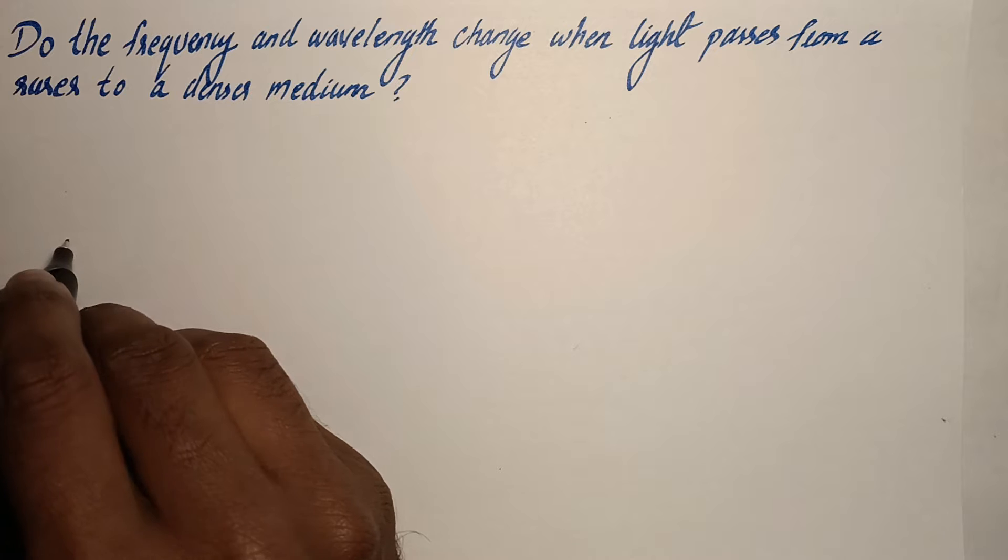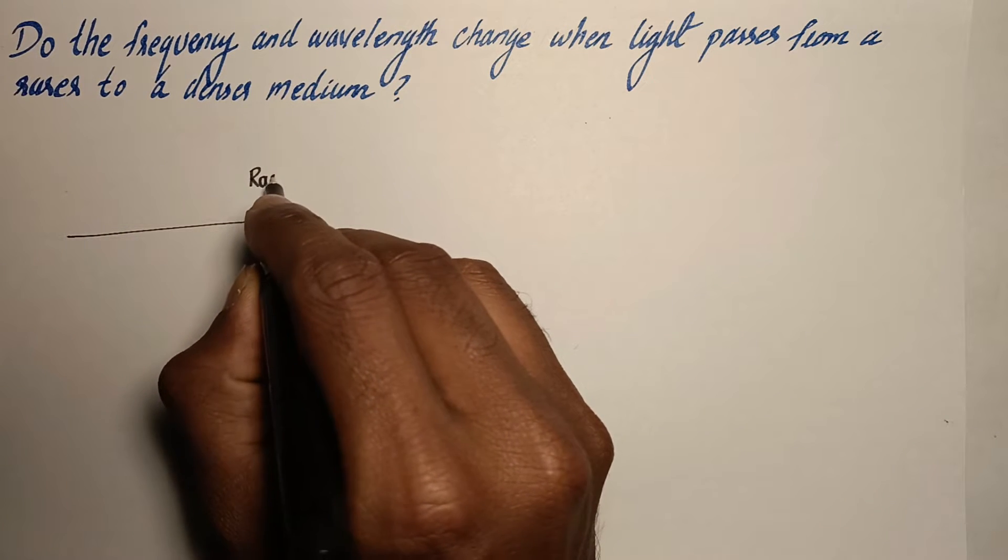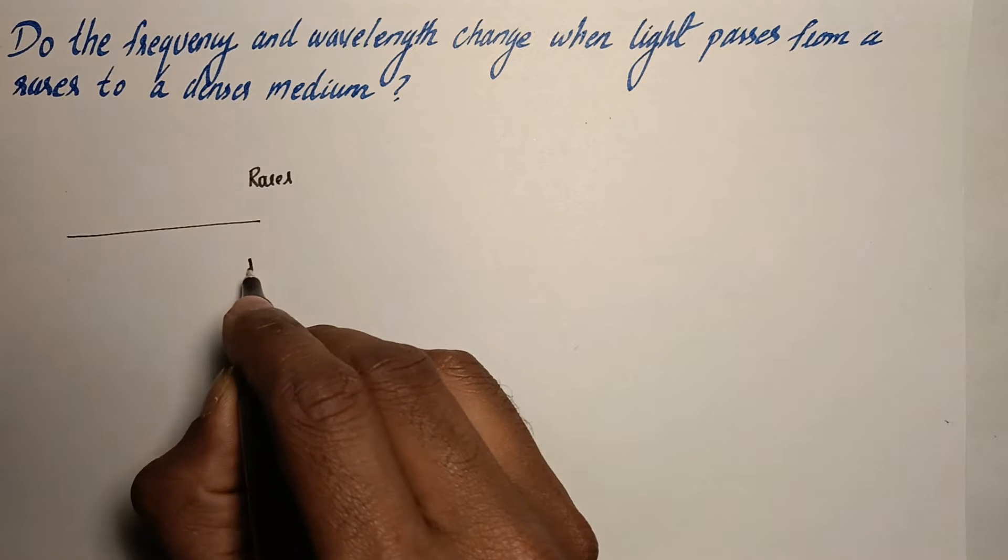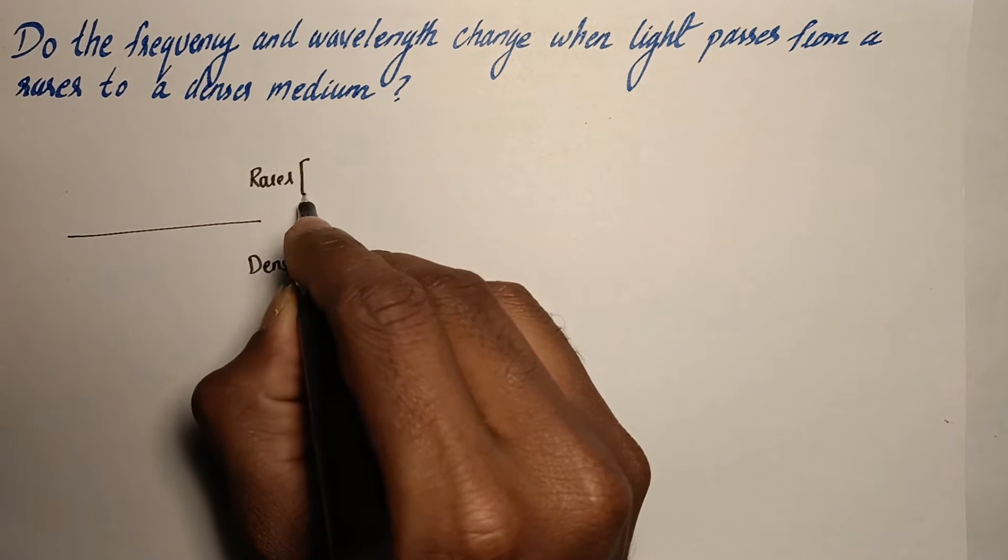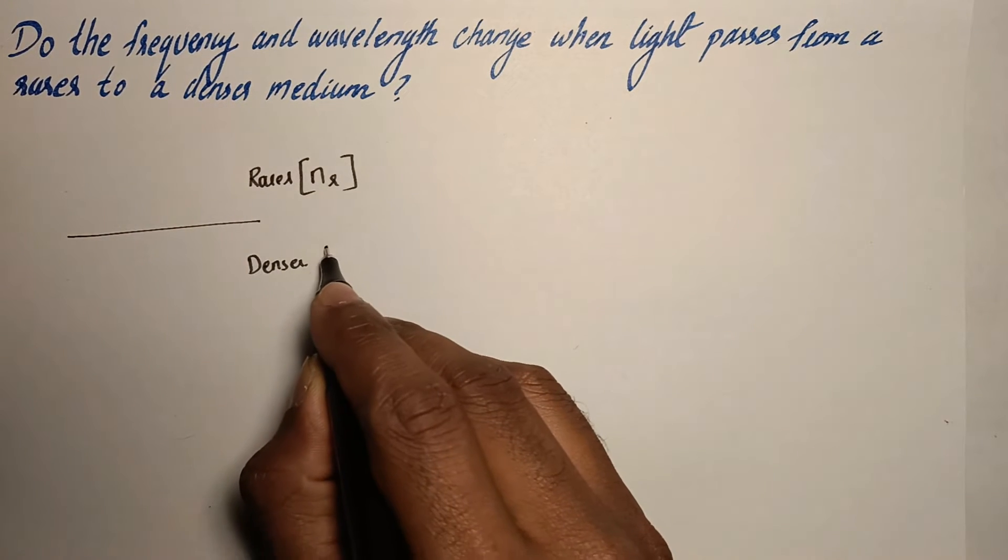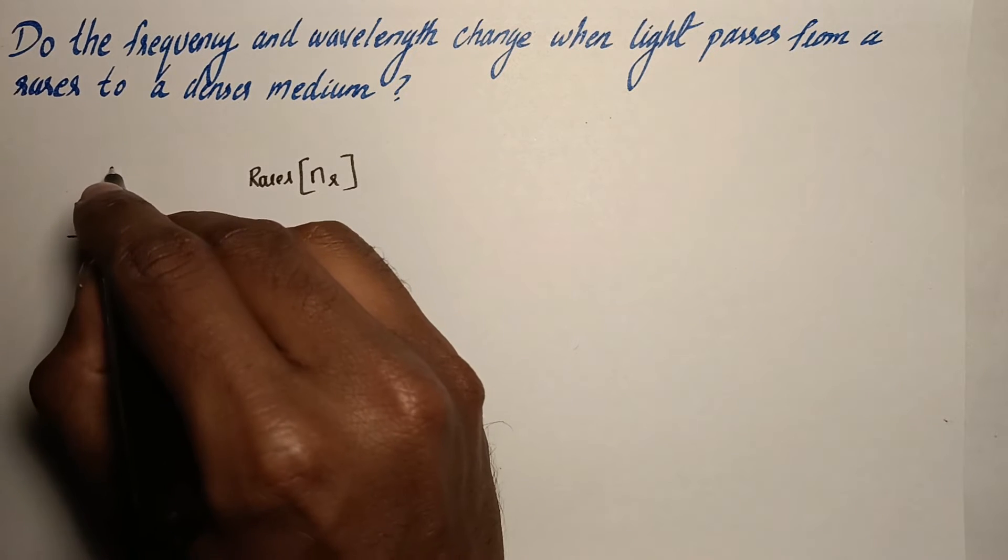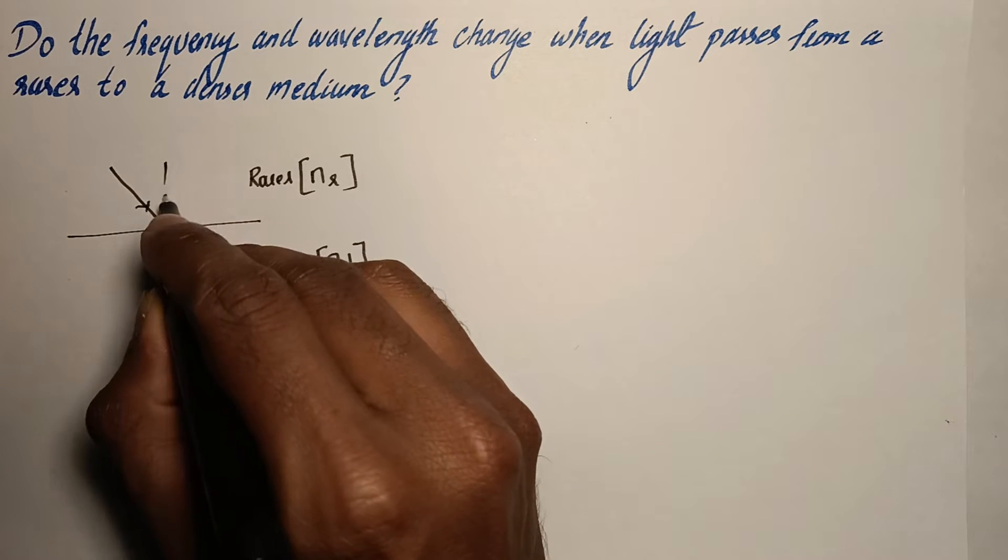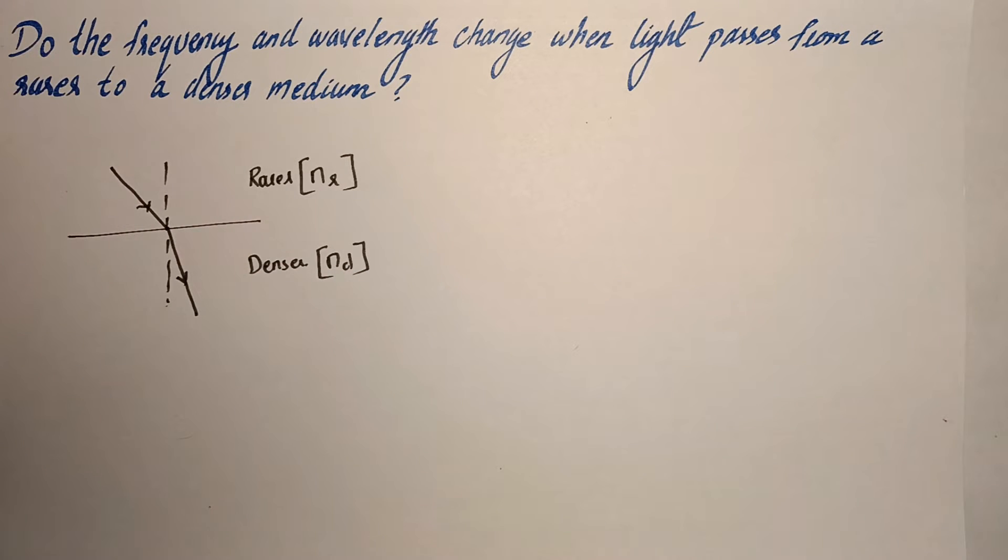So let us first discuss the theory. This is a rarer medium and from there light is moving to a denser medium. Let the refractive index of rarer medium be nr and the refractive index of the denser medium be nd. So the light is coming like this and at the point of incidence it bends towards the normal and passes like this.